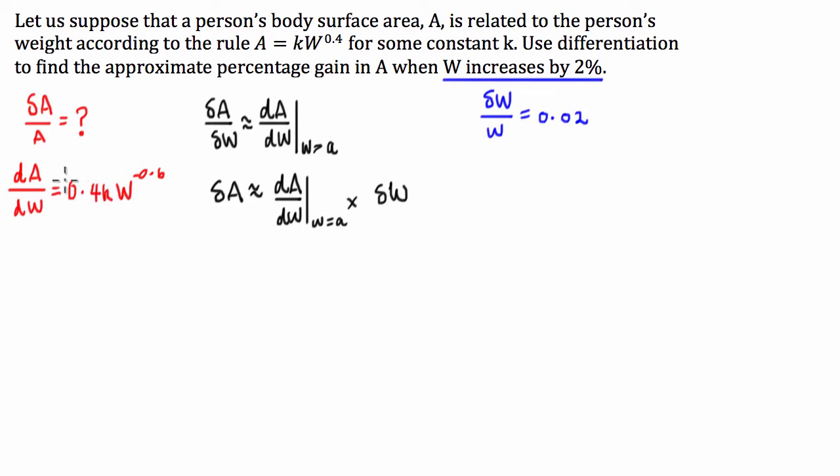So what we can do is we can replace this in here, and we can say that delta A is equal to 0.4kW to the negative 0.6 times delta W. Now what we're going to do is we're going to try and work this function so we have delta A over A.